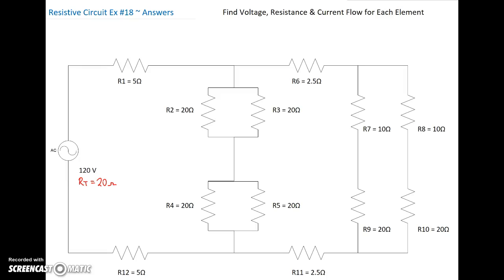Alright guys, let's go through this one. This one's number 18, and this is the last one. I've already got the RT down there — it's 20 ohms. But let's see how we find that 20 ohms, because we need to find the current first and then follow it all the way through. We're going to find voltage, resistance, and current flow for each of the elements.